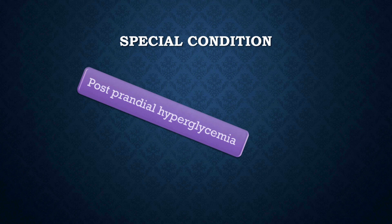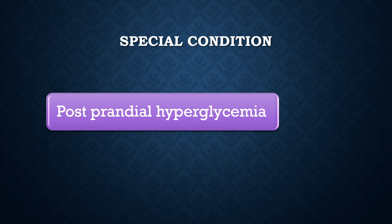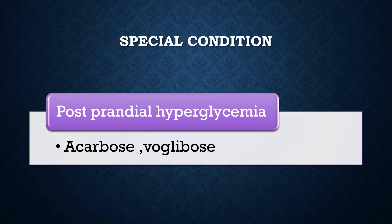In certain special conditions: if FBS is controlled but there is only postprandial hyperglycemia — PP2BS not controlled — you can add acarbose or voglibose. Brands available are Glucobe for acarbose and Voglison for voglibose.